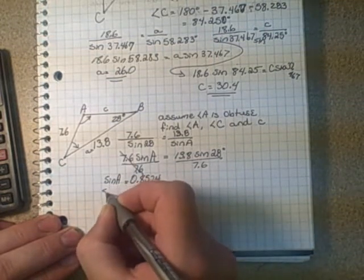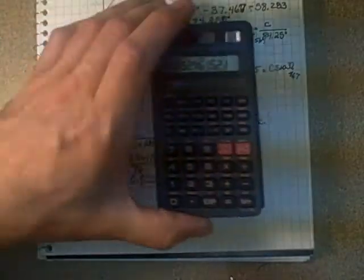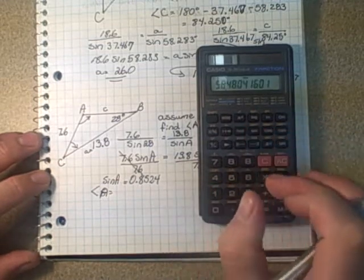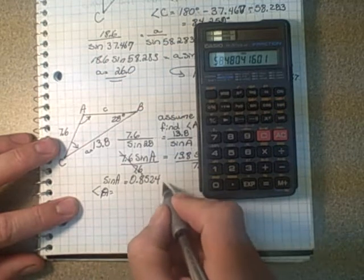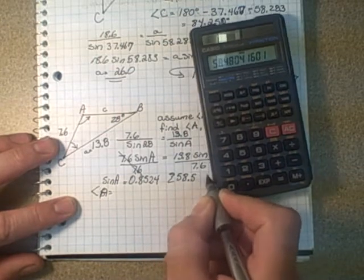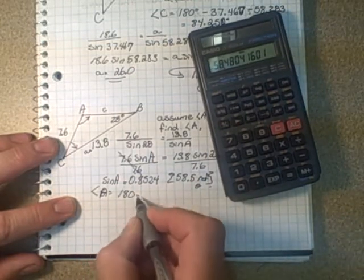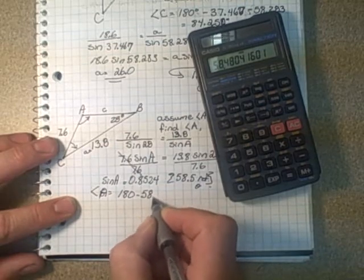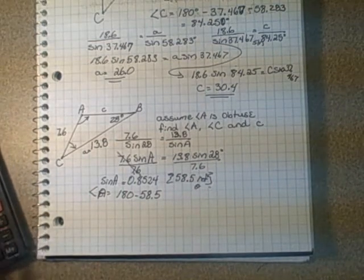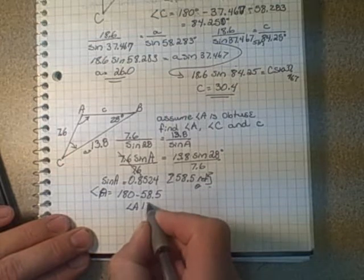We second-function sine that to get angle A. Now this is where it's important because we're assuming it's an obtuse angle. When we go shift sine, we're going to get the reference angle. The reference angle is 58.5 degrees. But since it's an obtuse angle, we do 180 minus that. So angle A equals 121.5 degrees.